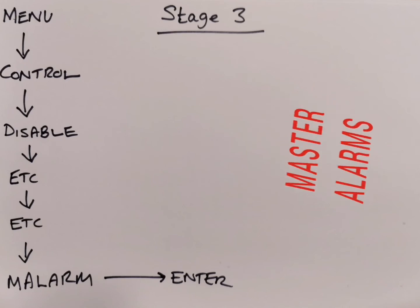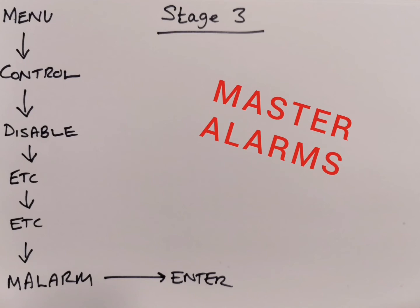This one is nice and simple. You start by pressing the menu button, then press the control button, then go for the disable button. You may have guessed after not seeing the option for master alarms that you need to press etc and just went ahead and pressed it, but now find yourself in a panic again because you still do not see a master alarm option. Panic not, press etc again and you will see it.